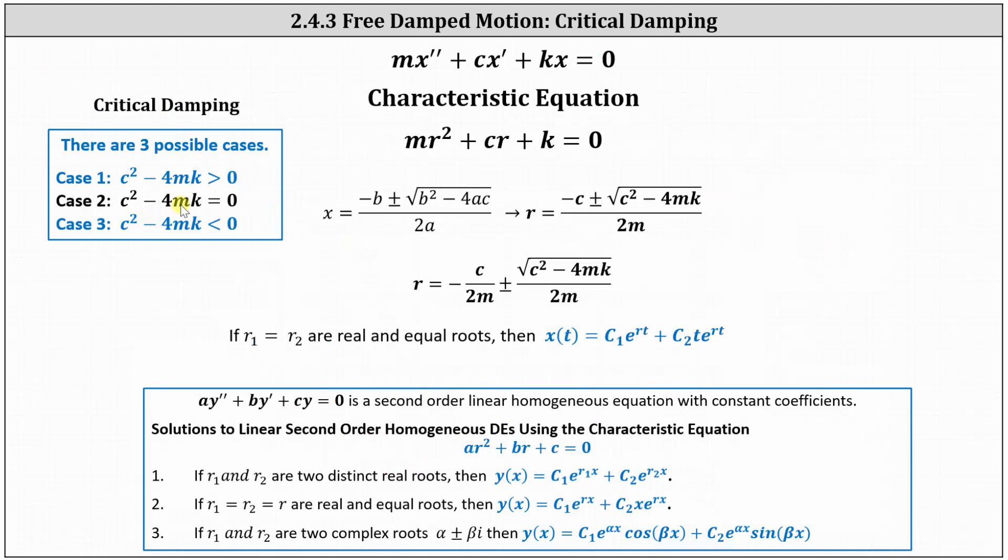Next, we have c squared minus 4mk equals zero. In this case, we have critical damping. If the discriminant equals zero, then r sub one equals r sub two, and we have two equal roots which equal negative c divided by 2m.